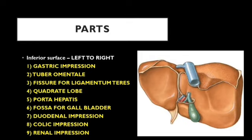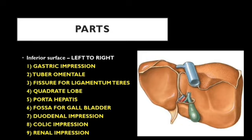Just next to the fissure for ligamentum teres is a quadrangular-shaped area called the quadrate lobe. Its boundaries are: above, the porta hepatis; below, the inferior border; on the left, the fissure for ligamentum teres; and on the right, the fossa for the gallbladder. To the right of the quadrate lobe is the gallbladder fossa, which lodges the gallbladder.